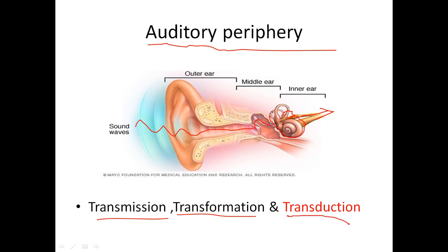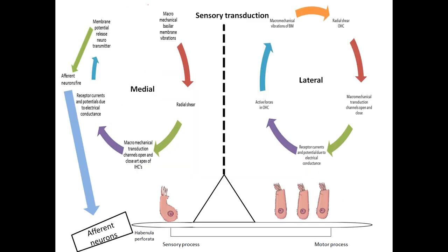Our area of interest is this transduction — that is inside the cochlea and the nerve, what is going to happen inside the cochlea. The sensory transduction refers to the sensory hair cells — the outer and inner hair cells. Transduction is from one form of energy to another. When the stapes moves in and out in the oval window, the basilar membrane is set to vibration. That is the macro-mechanical vibration of the basilar membrane. This is the organ of Corti, with one row of inner hair cells and three rows of outer hair cells.